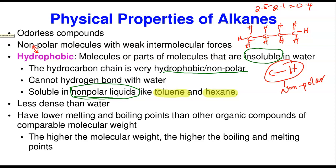Because of their non-polar nature, alkanes are less dense than water, meaning they usually have densities less than water. So if you put gasoline in water, the gasoline settles on top and floats because it is less dense than water. Also because of this non-polar nature, they have lower melting and boiling points when you compare them with other classes of organic compounds of comparable molecular weight, because they cannot form strong intermolecular forces with themselves.